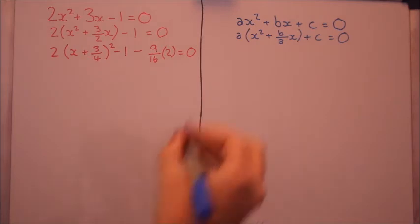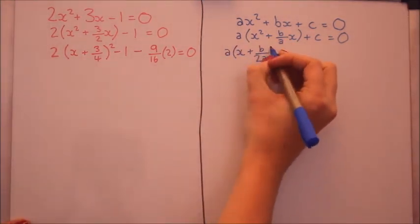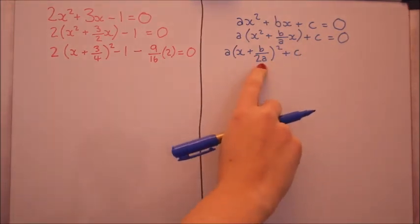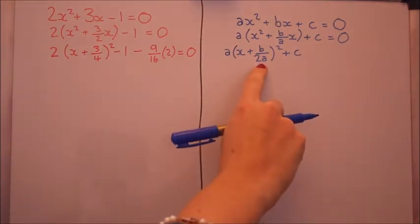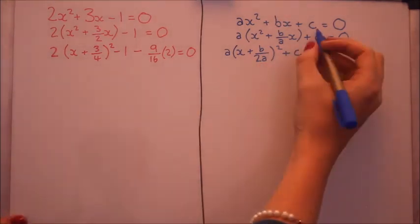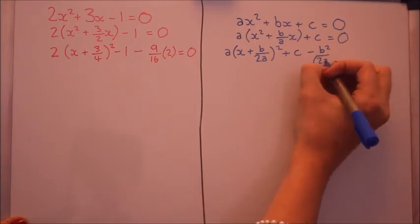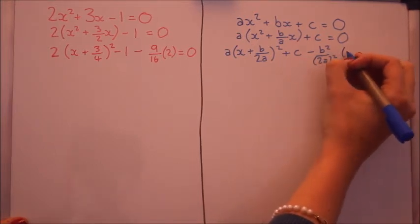Let's do the same over here. So we've got another factor of 2 on the bottom because we've halved it. We've got the plus c from there and now we need to take off the b squared over 2a squared, times by a.